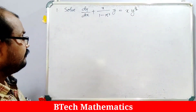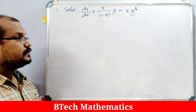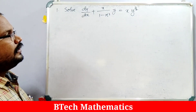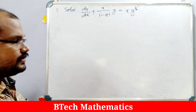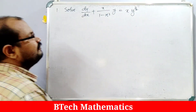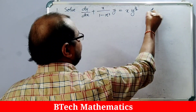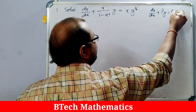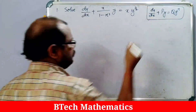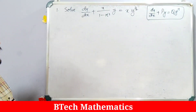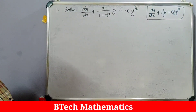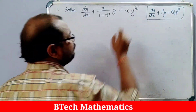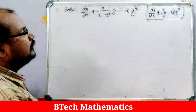Now we have a question: solve the differential equation dy/dx + x/(1-x²)·y = x·y^(1/2). It is of the form dy/dx + Py = Q·y^n, so we divide the equation throughout by y^n, that is by y^(1/2) = √y.